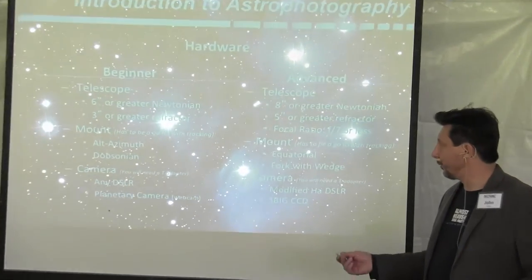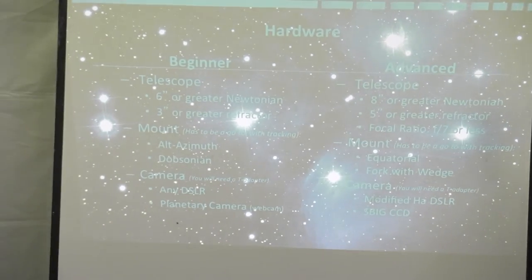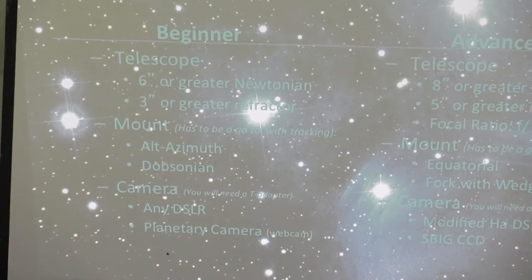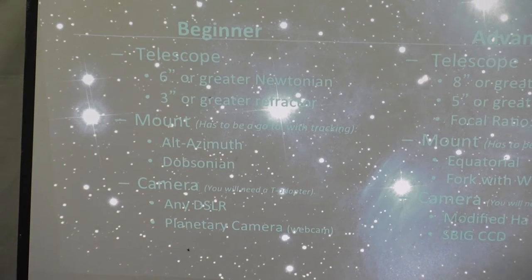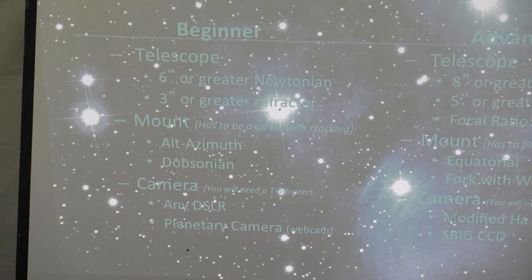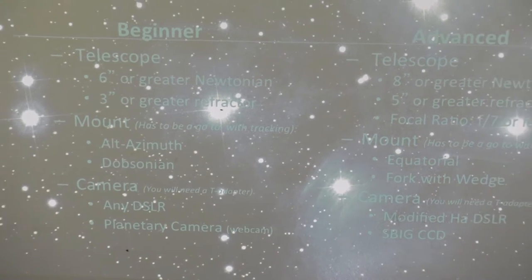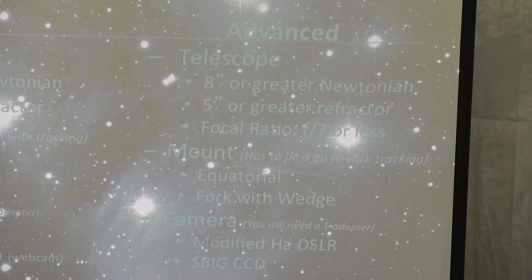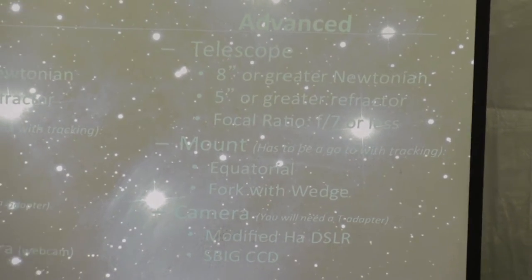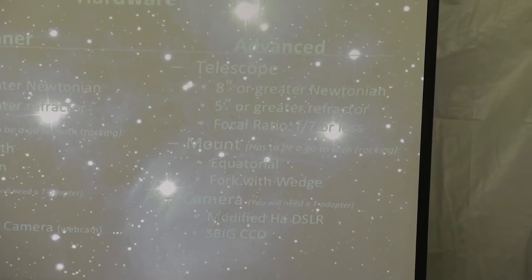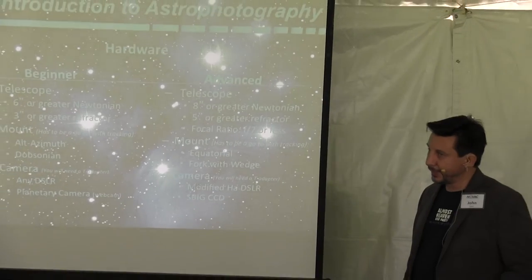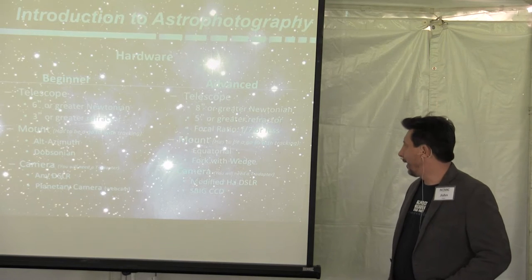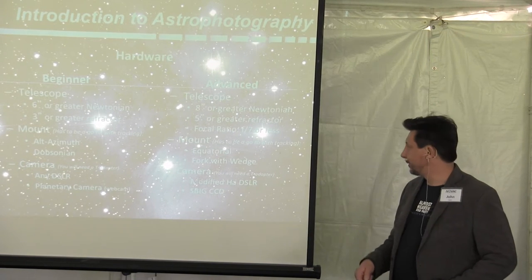To begin, you want a mount to be an Alt-Azimuth or a Dobsonian. Those are your less expensive mounts that can get you started. A camera is any DSLR. We're talking about beginner here. You can also get a planetary camera, which are pretty inexpensive.